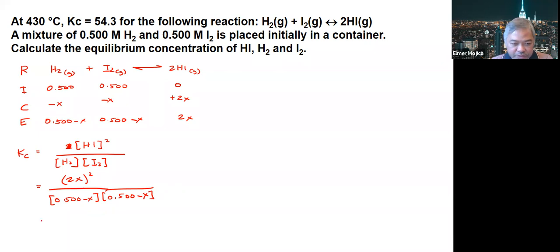If we simplify this, it becomes 4X squared over (0.5 minus X) squared, and we set this equal to 54.3.